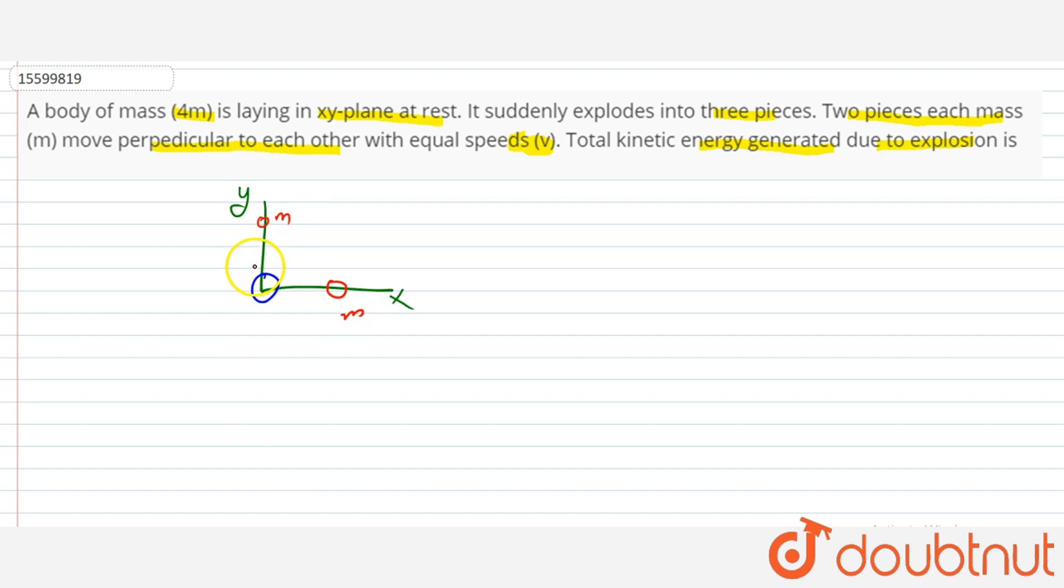So, perpendicular to each other is x and y. So this is the direction of momentum with speed v. So speed is v. And this direction is momentum, which is v.